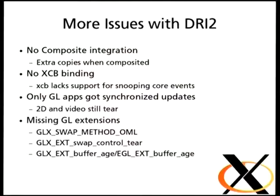Other issues with DRI2: there was no support for integration with the composite extension. When a DRI2 application updated its buffer, you'd get a blit into the window's back buffer synchronized with V-blank off-screen, and then the composite manager would say, oh look, somebody updated contents. Every time you ran a GL application in a window under DRI2 with a composite manager running — which is to say GNOME Shell, KWin, any modern desktop — you had an absolute guaranteed additional frame of latency between your application's rendering and presentation on screen. And you couldn't do DRI2 in XCB because of the event processing problems.